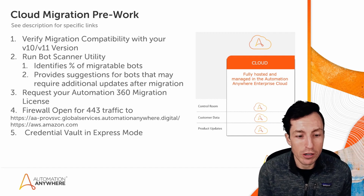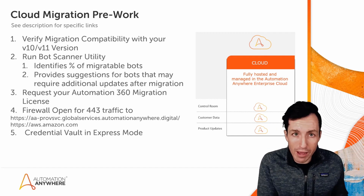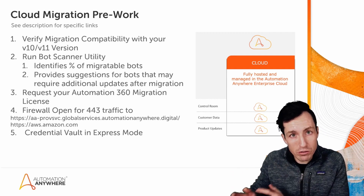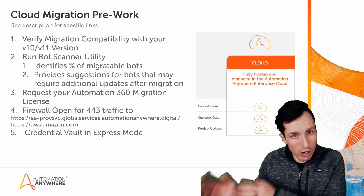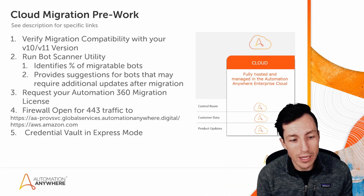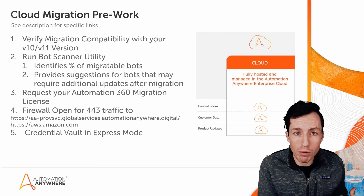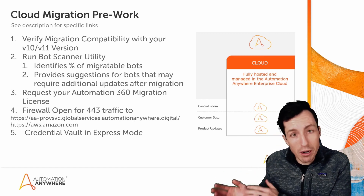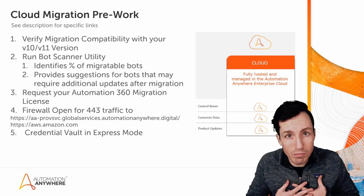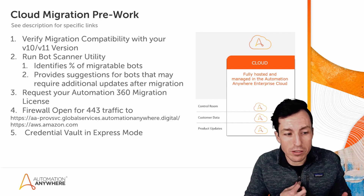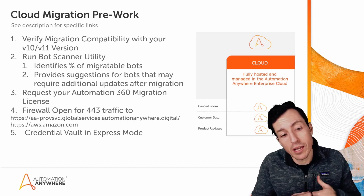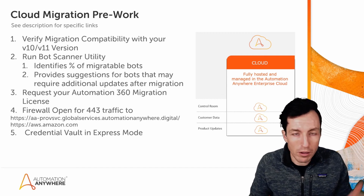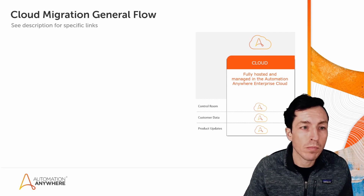You'll need to at least temporarily open up traffic to those two locations through port 443 so that your v11 or v10 environment can be appropriately migrated. The last thing is to make sure your credential vault is set in express mode. If it's not, you won't be able to migrate the credential values and credential variables to your A360 target environment. Set it to express mode temporarily for the migration, then set it back to manual mode afterwards if you prefer.